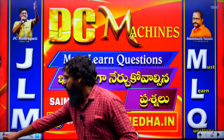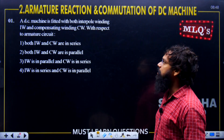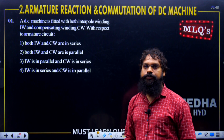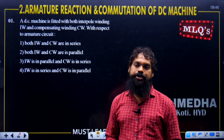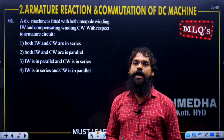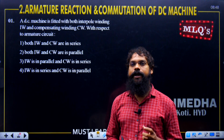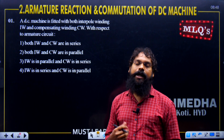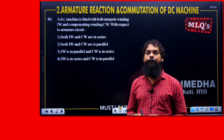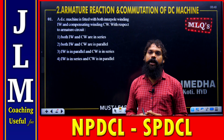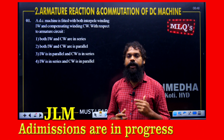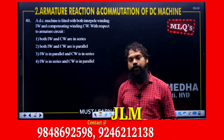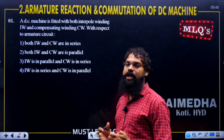The first question: a DC machine is fitted with both interpole winding and compensating winding. With respect to the armature circuit, DC machines have commutation problems — the MNA axis and the brush position — so we have a chance of sparking. That is a major disadvantage of DC machines. We expect to see questions about interpole winding and compensating winding.